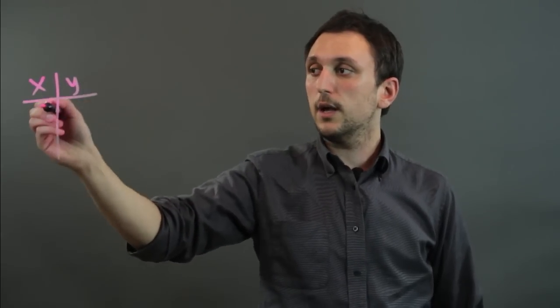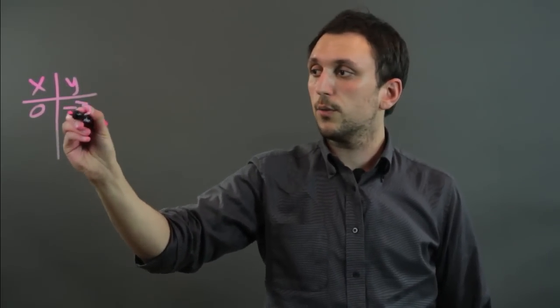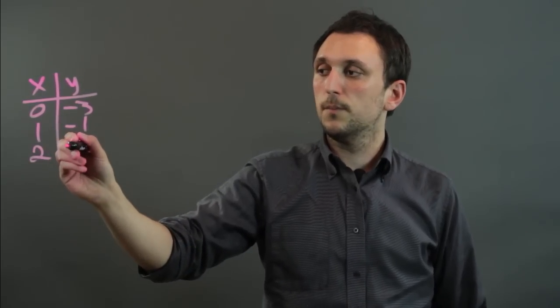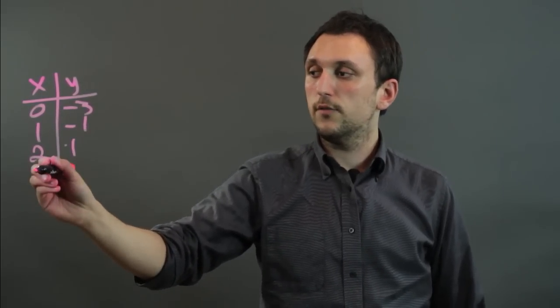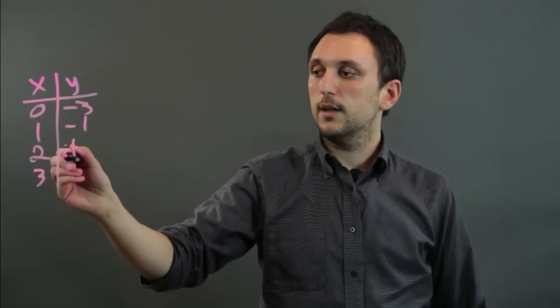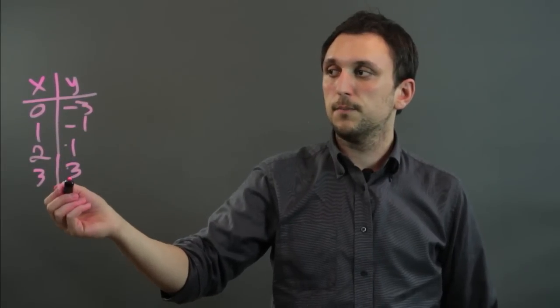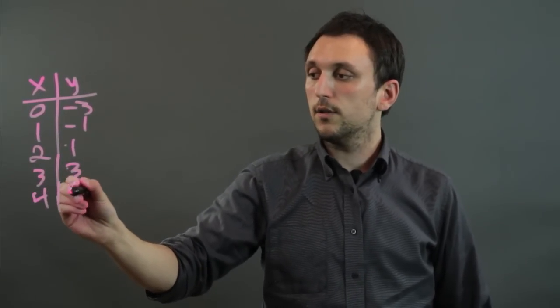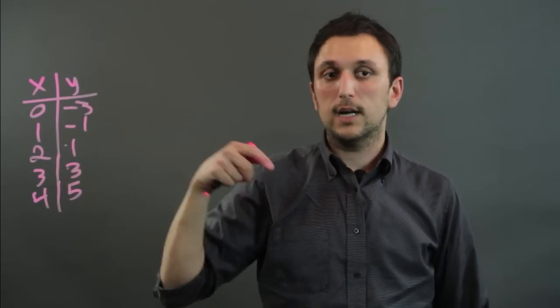So first, let's put a table of values on the board. We have our x's and our y's, and we say if x is 0, y is negative 3. If x is 1, y is negative 1. If x is 2, y is 1. If x is 3, y is 3. So if x is 4, y is 5. So here's our table of values.